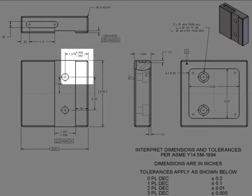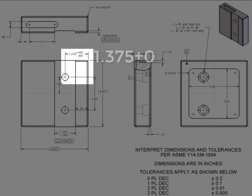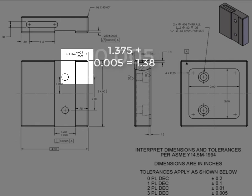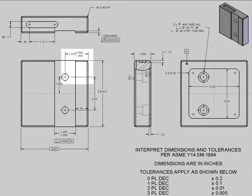The inch and three eighths distance to the hole centers has a bilateral tolerance. The basic feature size is one and three eighths. The minimum distance the hole can be from the part edge is 1.375 and the maximum distance is 1.380, giving a tolerance of 0.005 or five thousandths of an inch.